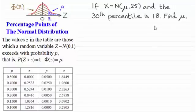What we've got here is a random variable X distributed normally with a mean mu and the variance is 25, so the standard deviation would be 5 — 5 squared gives us 25. The 30th percentile is 18, so we've got to find the mean mu.